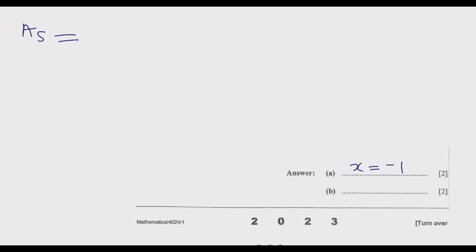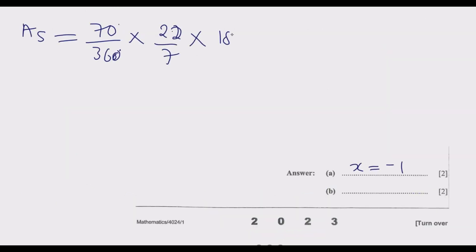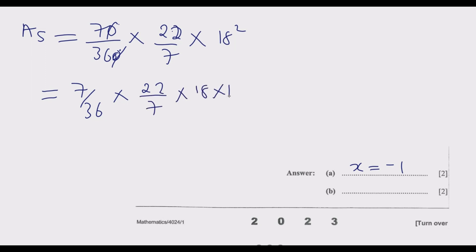Moving to the calculation: area of the sector equals 70 degrees divided by 360 degrees, then multiplied by pi which is 22 over 7, then multiplied by R squared which is 18 times 18. This 70 over 360 simplifies — dividing both by 10 — to 7 over 36. Then the 7 in the denominator and the 7 in 22 over 7 cancel, leaving 22 over 36. Then 2 into 36 is 18, and 2 into 22 is 11. This 18 and one of the 18s cancel, leaving 11 times 18.